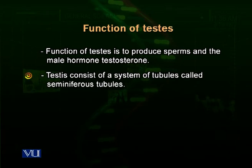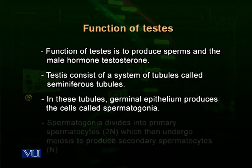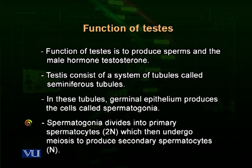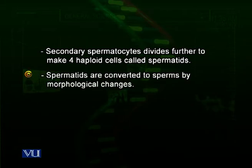The testis consists of a system of tubules called seminiferous tubules. From the germinal epithelium, germ cells divide by mitosis to produce primary spermatocytes with 2N chromosomes. These undergo meiosis to produce secondary spermatocytes with N chromosomes. Secondary spermatocytes divide further to make spermatids — four in total — which also have a haploid set of chromosomes. Spermatids are then converted into sperms by morphological changes.